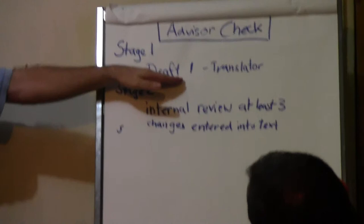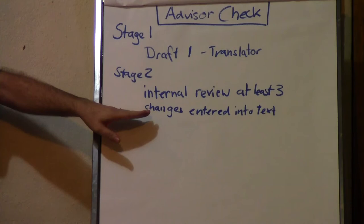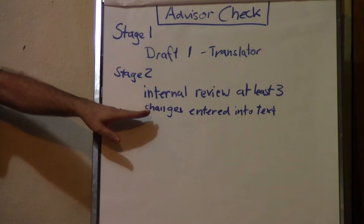Now at this point, it's the translator's text. He can say, this is my text, I've done it. And he's responsible for all the mistakes. And even though it may be the translator himself that has to enter the changes into the text, it's no longer his text. It's already the committee's text. It's already the text of everybody.